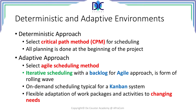In an adaptive approach, we use an agile scheduling method. The way of scheduling is iterative. A backlog is created in which you find all the activities and tasks to be completed. This is typical for an agile approach and is a form of rolling wave scheduling. There is also the possibility to schedule on-demand, which is typical for a Kanban system. Flexible adaptation of work packages is possible because we can adjust flexibly to changing needs.